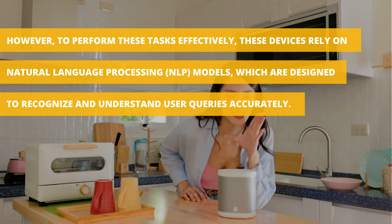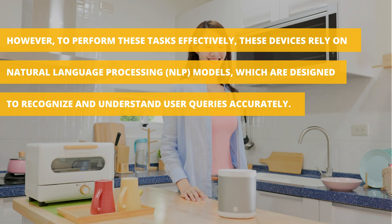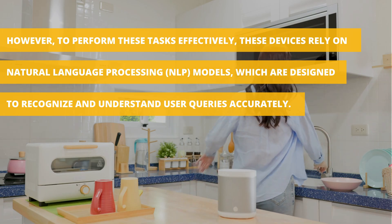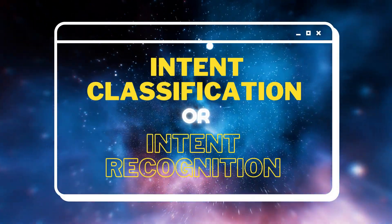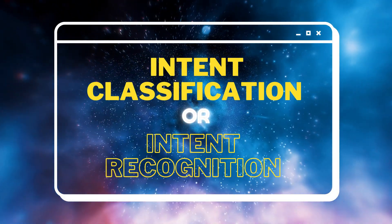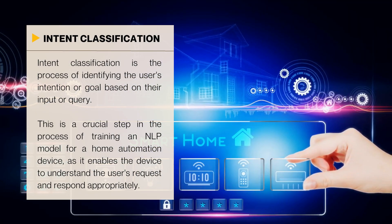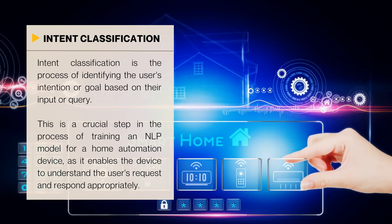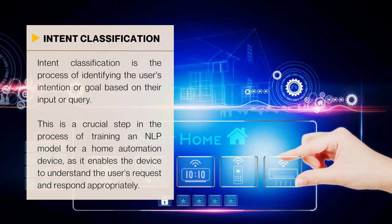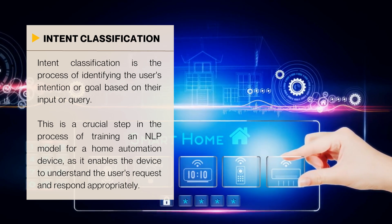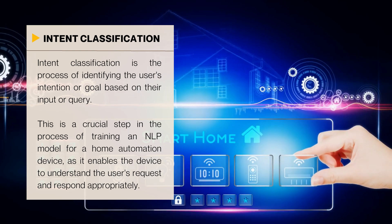However, to perform these tasks effectively, these devices rely on natural language processing, NLP models, which are designed to recognize and understand user queries accurately. This process is commonly known as intent classification or intent recognition. Intent classification is the process of identifying the user's intention or goal based on their input or query. This is a crucial step in the process of training an NLP model for a home automation device, as it enables the device to understand the user's request and respond appropriately.